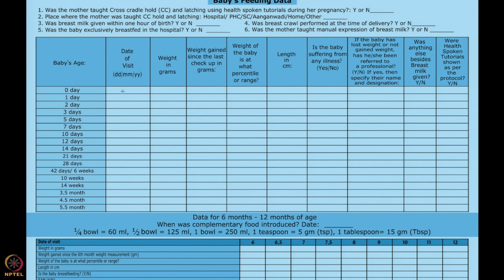On day zero — the birthday — staff nurse will write down the weight in grams at day of birth, weight gain (which will be empty), weight percentile range (also empty), and length in centimeters. Is the baby suffering from any illness? Has the baby lost or gained weight — on day zero this will be empty. Was anything besides breast milk given — any prelacteal feeds? Were the health spoken tutorials shown as per protocol? On day zero, cross-cradle hold and latching tutorials are recommended.